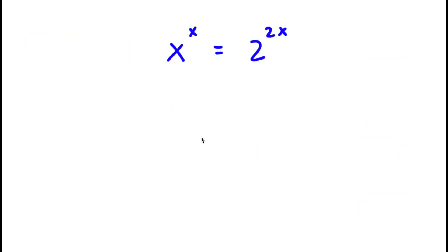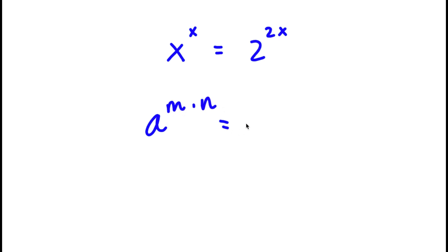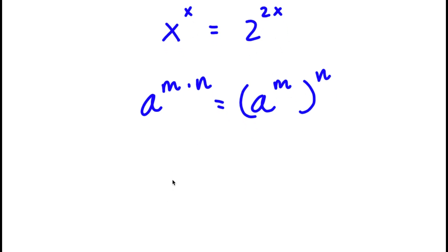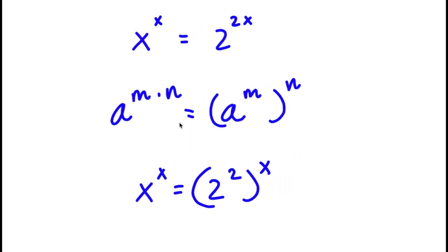Welcome back to Click Academics. In today's video, I'm going to be teaching you how to solve this exponential equation. I have x to the power of x is equal to 2 to the power of 2x. Now, if I have something in the form a to the power of m times n, this is the same thing as a to the power of m to the power of n. So 2 to the power of 2x can be rewritten as 2 to the power of 2 to the power of x.